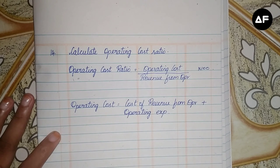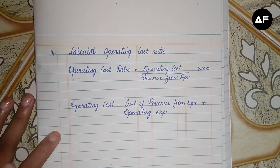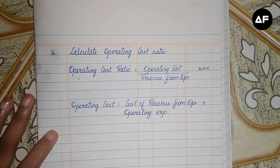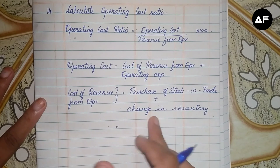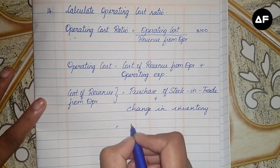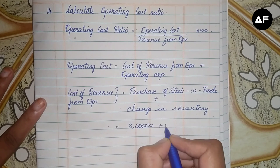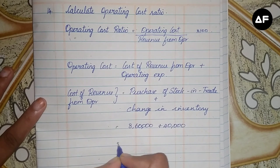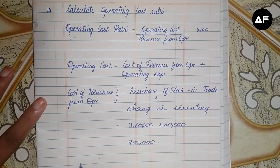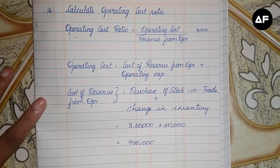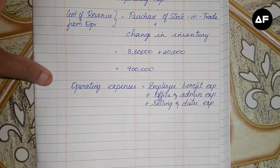For cost of revenue from operations, when you look into the sum they have given purchases of stock and trade and change in inventories. When you add both, you get cost of revenue from operations. So cost of revenue from operations equals purchase of stock and trade — which is 8 lakhs 60,000 — plus change in inventory of 40,000, giving cost of revenue from operations as 9 lakhs.